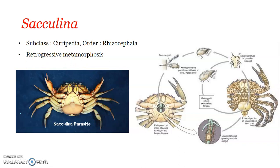Now, what are the effects of parasitism on Sacculina? The parasitic mode of life exerts tremendous effects on the parasite as well as on the host. On the host crab, there is great disturbance in metabolic processes. The process of molting - the shedding of the external cuticular covering at various intervals during the growth period of the crab - almost comes to a stop when the parasite becomes external, that is, when the Sacculina externa stage is reached.